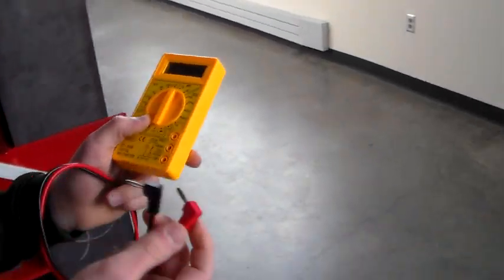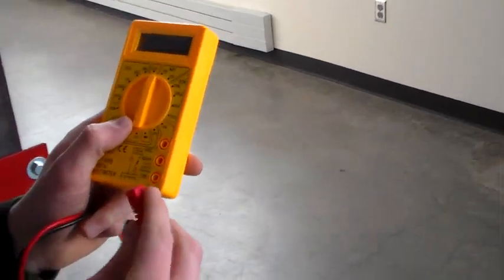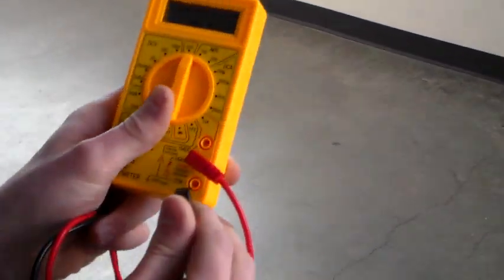Your first step is to connect your leads to your meter. The red lead will go in the middle hole, and the black lead will go in the bottom hole.